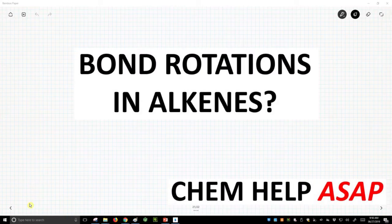Hello from Chem Help ASAP. Now, if you notice in all these videos in our playlist on conformational analysis, we have only talked about carbon-carbon sigma bonds, single bonds. How about alkenes or pi bonds? Can we do rotations in alkenes?